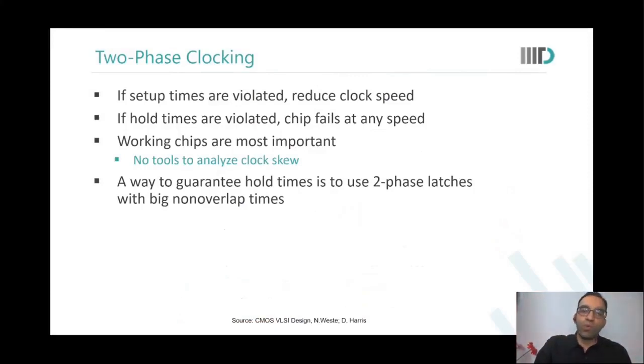What happens if there is a setup violation in a clock system? If the setups are violated, you reduce the clock speed. But if the hold times are violated, the chip fails at any speed. To get working chips is the most important requirement—you want the system to be functional on silicon. A way to guarantee that hold time failures do not happen is to have two-phase latches with big non-overlap times.